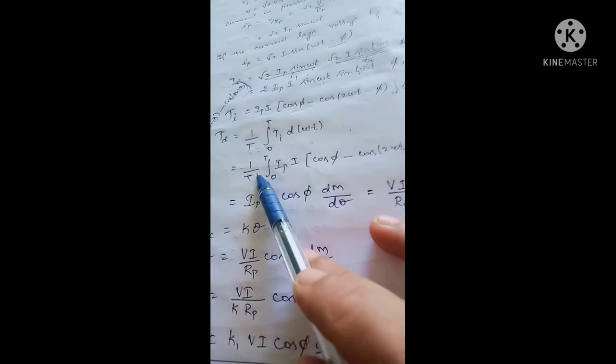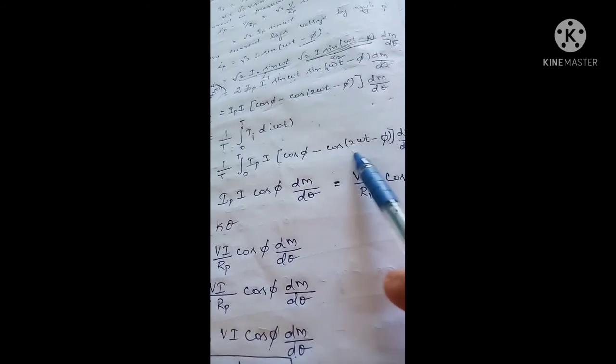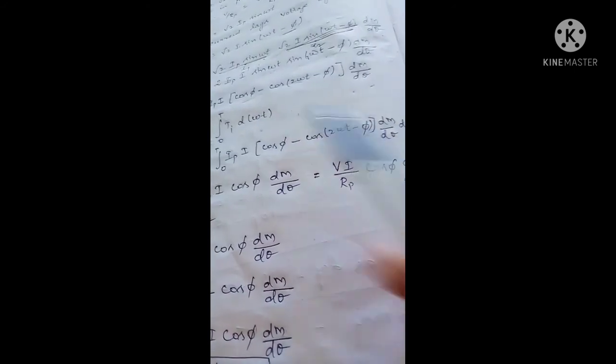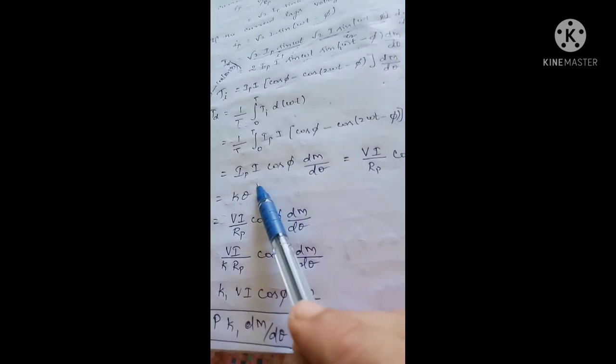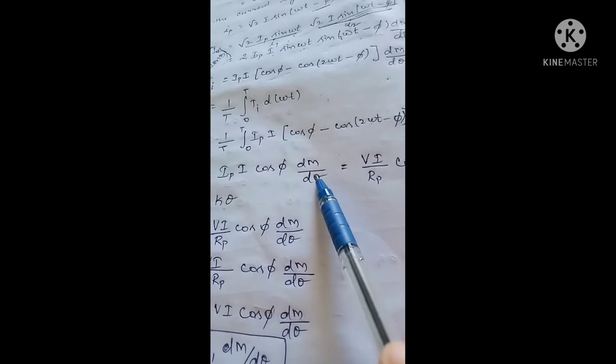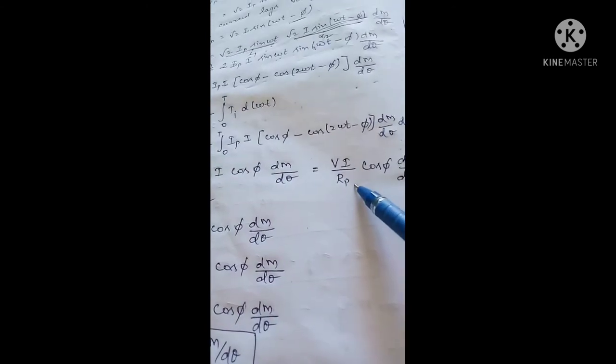Integrating Ti with respect to ωt, the cos(2ωt − φ) term averages to zero over a full cycle. The result is: Td = Ip · I · cos φ · dM/dθ. Substituting Ip = V/Rp, the deflecting torque equation becomes Td = (V · I / Rp) · cos φ · dM/dθ.